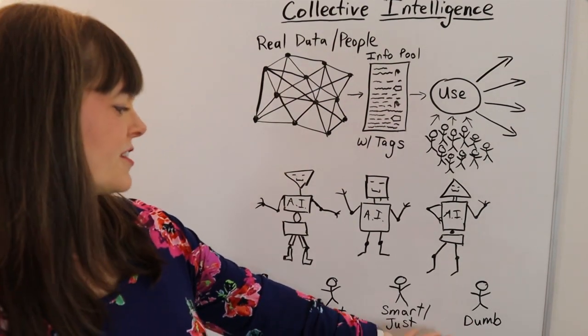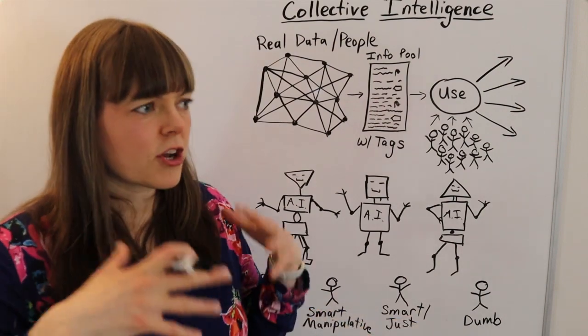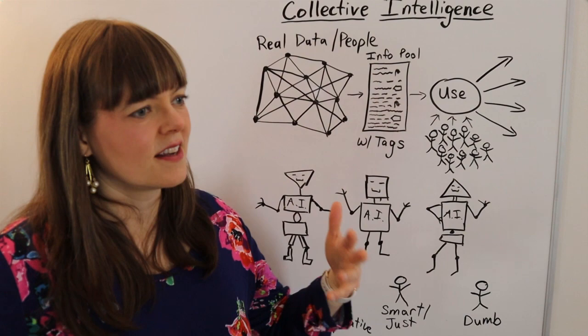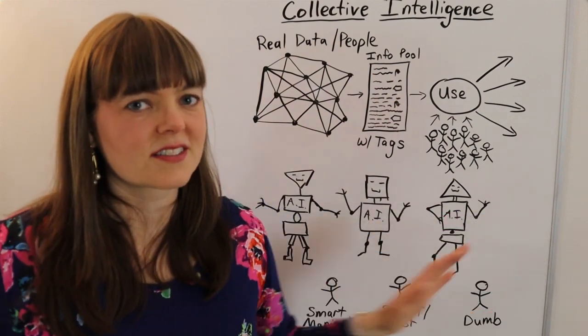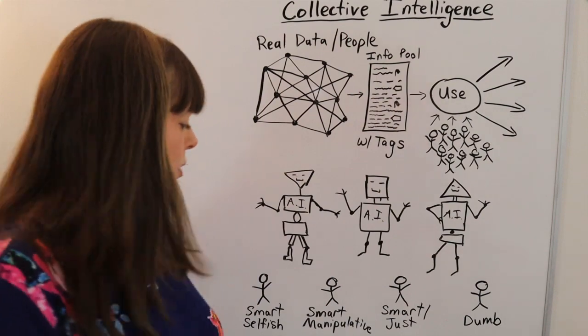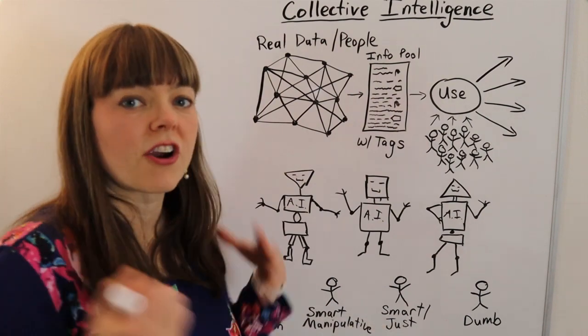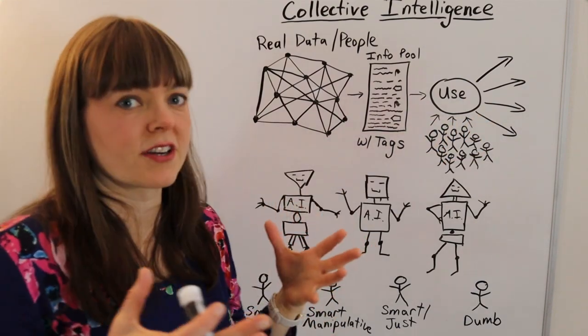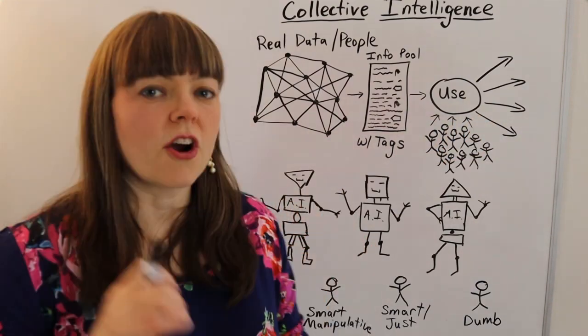So here we have the smart person who is smart but they're also really good at thinking of unintended consequences and sort of the broader implications of any decision that they may be making. Now with people we might actually think each of these three are equally intelligent but when it comes to collective intelligence we might have a different perspective.